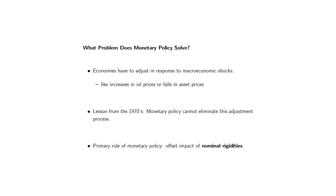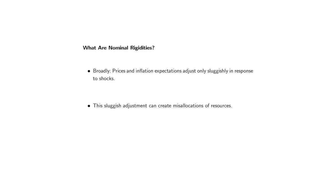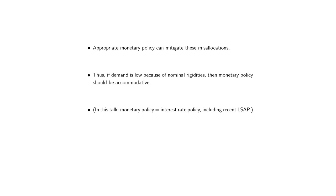What we learned from the 1970s is that monetary policy cannot eliminate the adjustment process of the economy to shocks. Instead, over the next 30 years, there's been considerable research in macroeconomics about what is the role of monetary policy. The conclusion from that research is that the goal of monetary policy is to offset the impact of what economists call nominal rigidities — the fact that prices and inflation expectations adjust only sluggishly in response to shocks. This sluggish adjustment can create misallocations of resources, and appropriate monetary policy can mitigate these. If demand is low because of nominal rigidities, monetary policy should be accommodative.